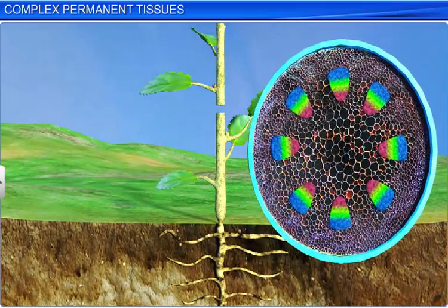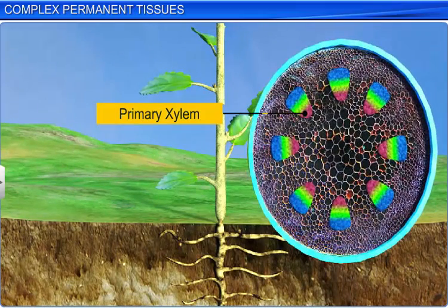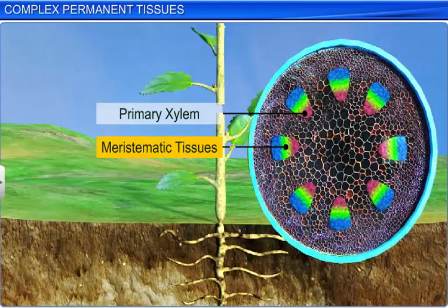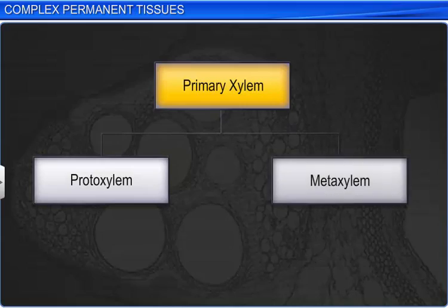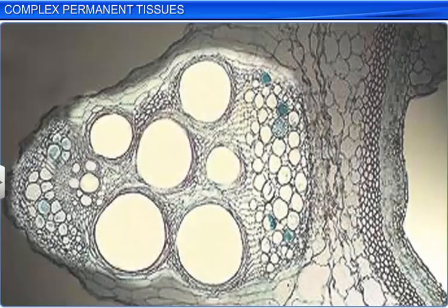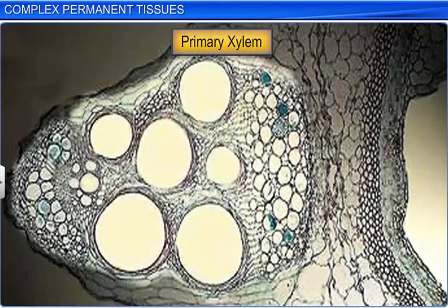Primary xylem consists of young cells produced from meristematic tissues by the differentiation process. Primary xylem is of two types: proto xylem and meta xylem. The primary xylem elements formed in the beginning of a plant's life are known as proto xylem, while those formed in the later stages are known as meta xylem.